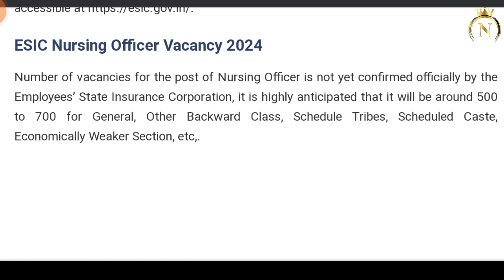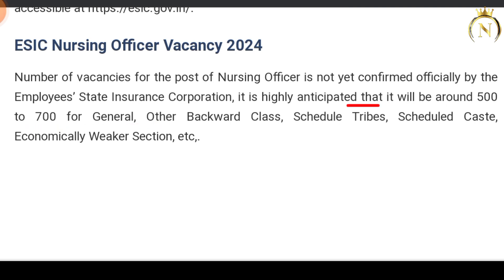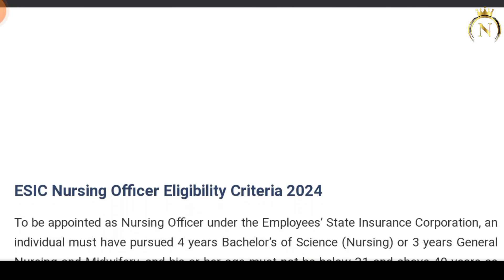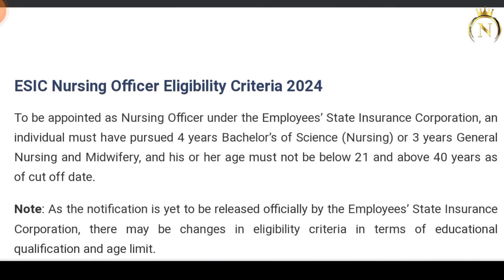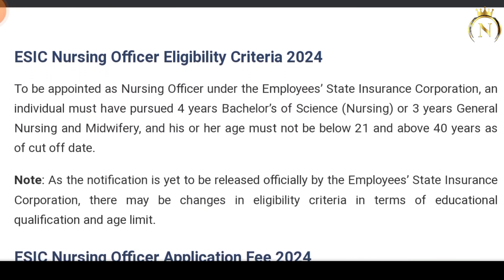The vacancy count is clearly around 500 to 700, distributed across General, Other Backward Classes, Scheduled Tribes, Scheduled Castes, Economically Weaker Section, and other categories for the ESIC Nursing Officer vacancy.